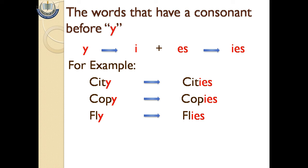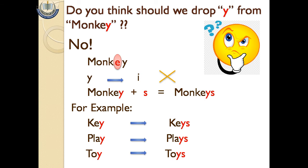Let's see some examples: city becomes cities, copy becomes copies, fly becomes flies. Do you think should we drop 'y' from monkey? No! Because there is not a consonant before 'y', there is a vowel.